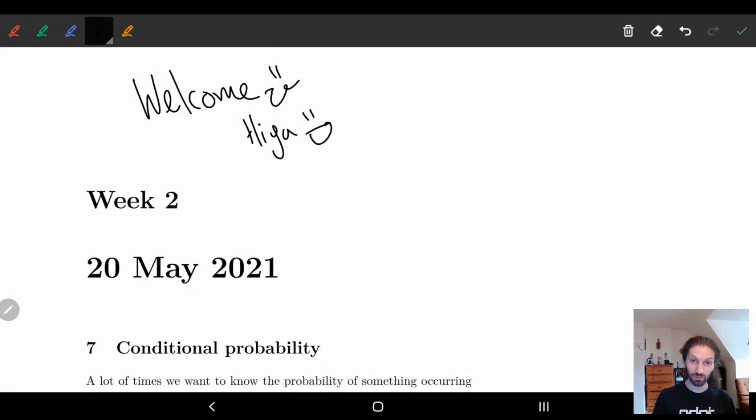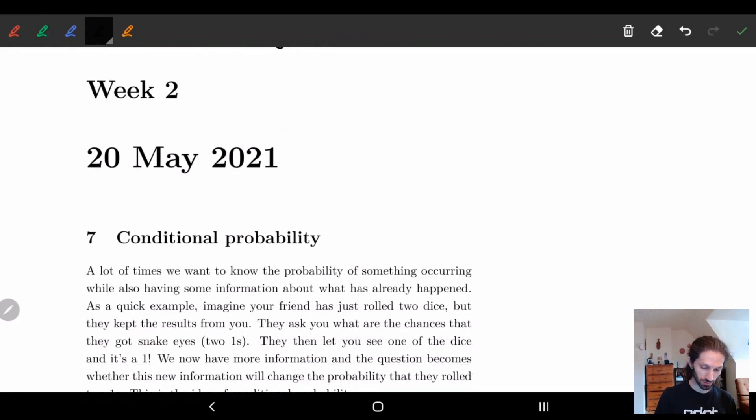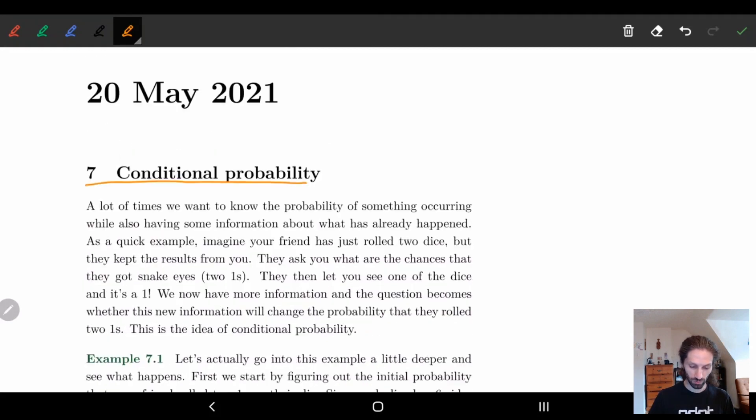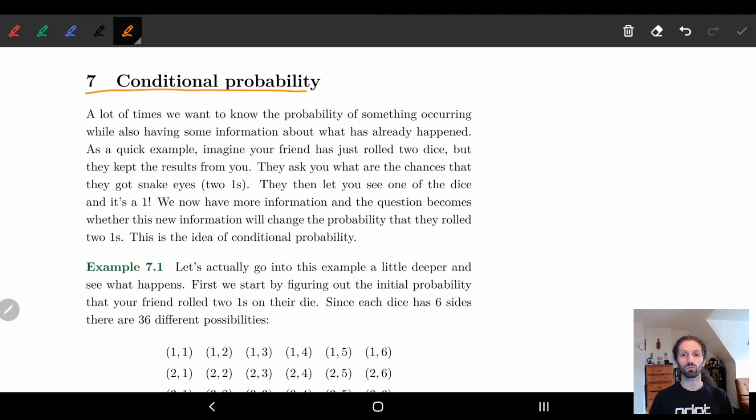So basically today what we're going to be talking about in this video is conditional probability. So we'll be looking at conditional probability. And what is this? Basically a lot of times when we're looking at probability we're asking if something has occurred but we generally know information on what has already happened.